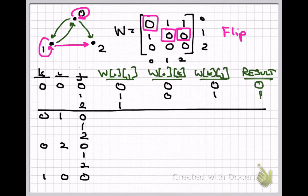In the next line, w[i][j] is 1, so no matter what w[i][k] and w[k][j] are, the result will be 1. For completeness: w[i][k] = w[0][0] = 0, and w[k][j] = w[0][1] = 1. So the result is (0 AND 1) OR 1 = 1. That 1 was already in the matrix and stays there for the rest of the algorithm.